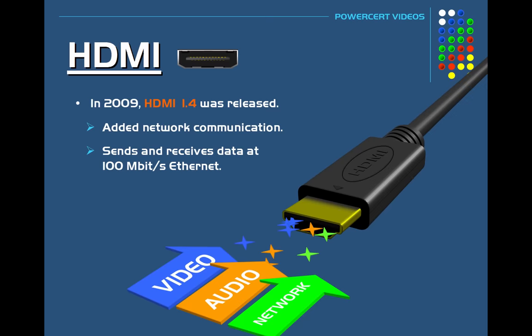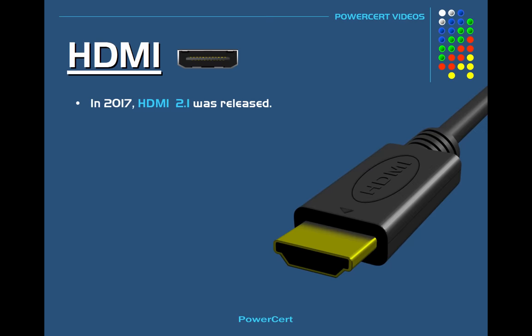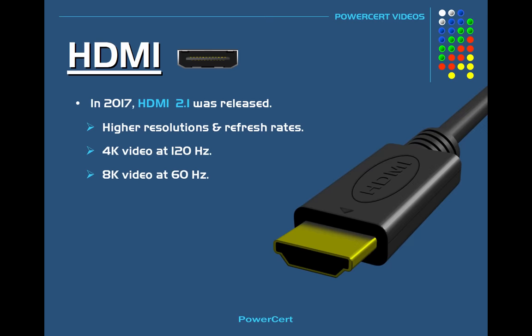In 2017, HDMI 2.1 was released, which added support for higher resolution and refresh rates, with support for 4K video at 120 Hz and 8K video at 60 Hz. It can also support a max resolution of 10K for commercial audio visual systems and specialty usages.